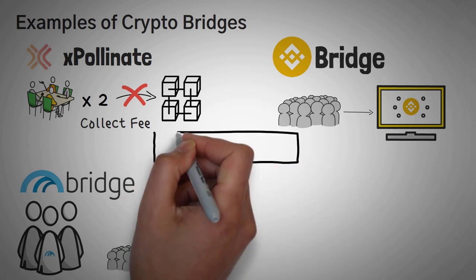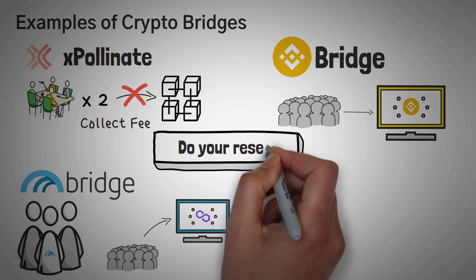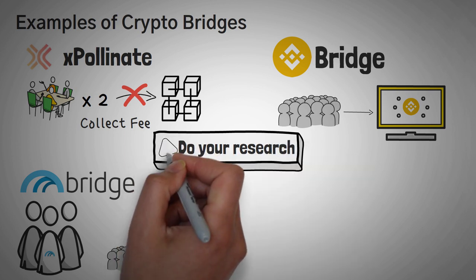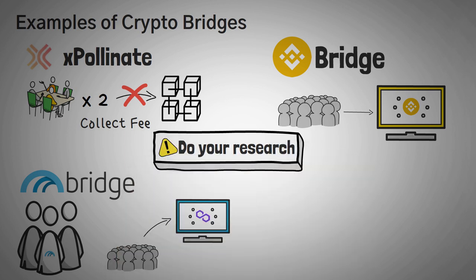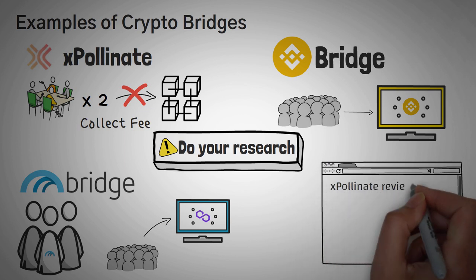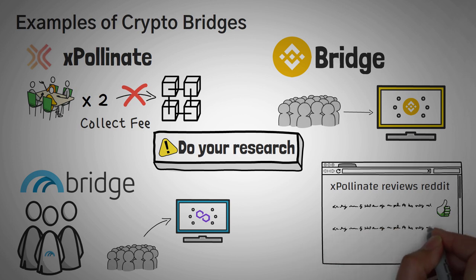There are many other bridges, but we highly recommend to check reviews and do your own research on whatever bridge you plan on sending your assets to. One quick trick that we recommend is to Google XPollinate Reviews Reddit, and then you'll get a ton of personal reviews. In this case, replace XPollinate with whatever bridge you plan to use. If that bridge decides to start scamming or rug pulling, it'll likely quickly show up on Reddit.